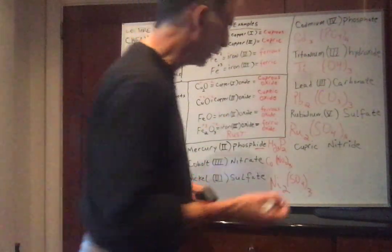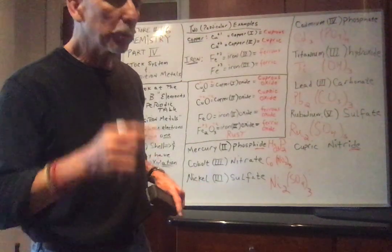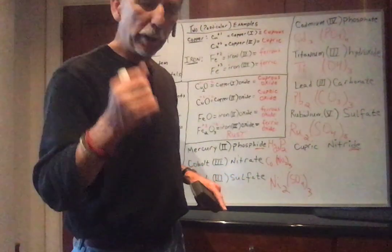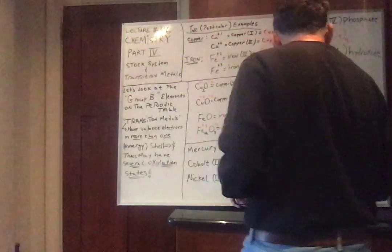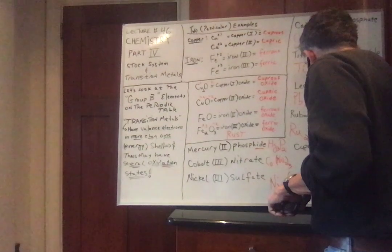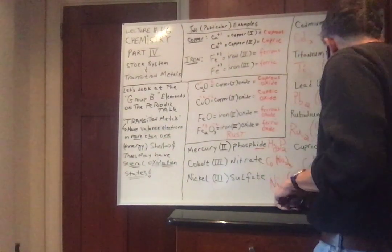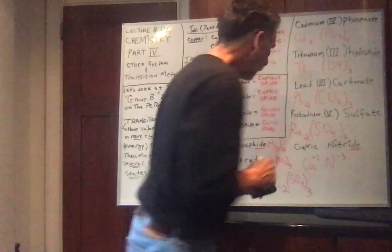And finally, cupric nitride. Ah, -ide. Be careful, don't be fooled by the -ide. Whenever the ending is -ide, it's just the element, not the polyatomic. So cupric means it's Cu plus 2, right? Cupric was plus 2. And nitride, N, is minus 3.